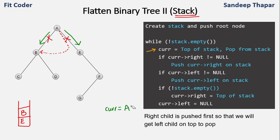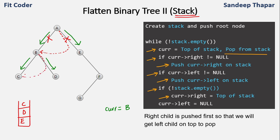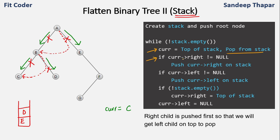In the next iteration, current becomes B (top of stack), we pop it. Right of B is D — push D. Left of B is C — push C. Stack is not empty, so right of B becomes C. Left of B is set to null. Next iteration: current is C, we pop it. Right of C is null, left of C is null — both if conditions false. Stack is not empty, so right of C becomes top of stack D. Left of C is set to null.